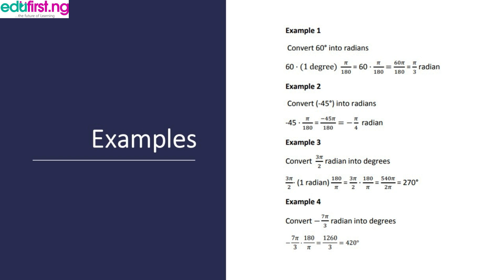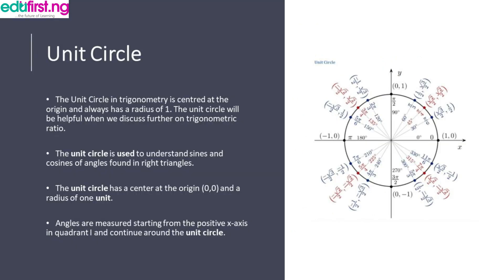The unit circle in trigonometry is centered at the origin and always has a radius of 1. It is used to understand the sine and cosine of angles found in right angle triangles.